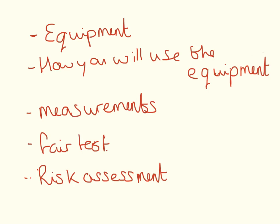So these are the five points you need to cover in your long nine-mark question in section one: your equipment list, how you will use the equipment (your method), the measurements (your dependent variable), the fair test (your control variables), and your risk assessment. I've made a whole separate video on the risk assessment, but don't forget to include it.